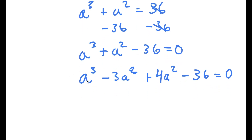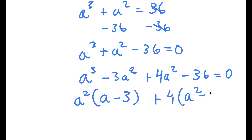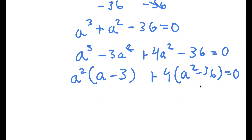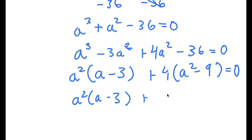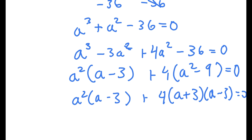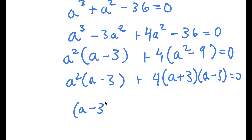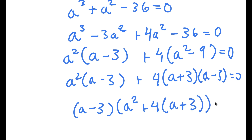I can rewrite the equation as a cubed minus 3a squared plus 4a squared minus 36 equals 0, then factor by grouping. From a cubed minus 3a squared I factor out a squared to get a squared times (a minus 3). From 4a squared minus 36 I factor out 4 to get 4 times (a squared minus 9). And a squared minus 9 factors as (a plus 3)(a minus 3). Factoring out (a minus 3) gives (a minus 3) times (a squared plus 4a plus 3) — wait, (a squared plus 4 times (a plus 3)) — equals 0.